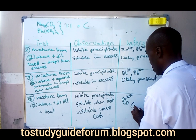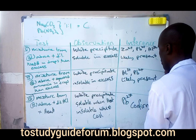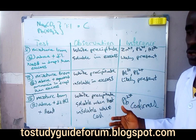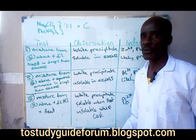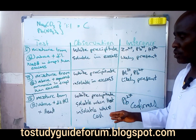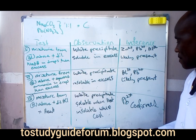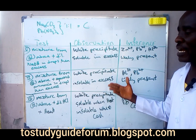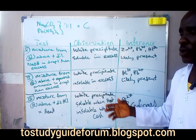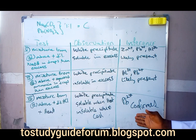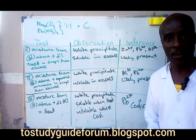So lead ion is confirmed. Other ways to confirm lead: you can use potassium iodide, which gives yellow precipitates of lead iodide. You can also use hydrogen sulfide gas — adding hydrogen sulfide gives a black precipitate, which also confirms lead.